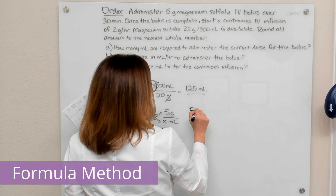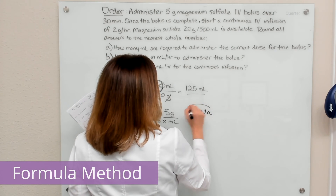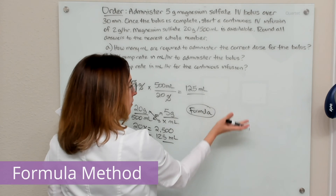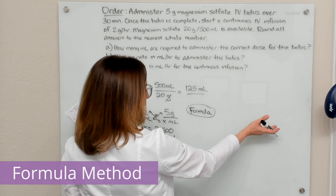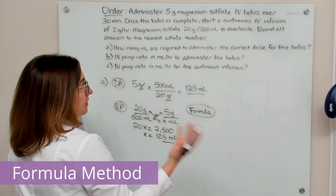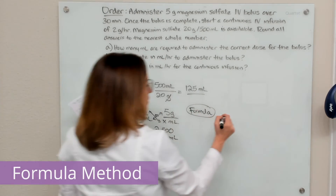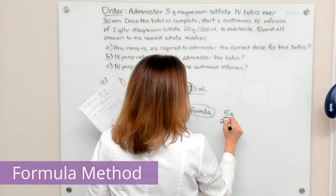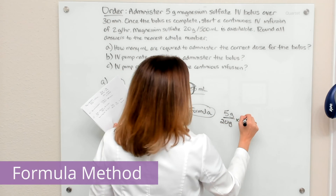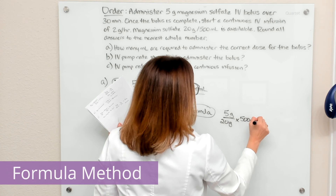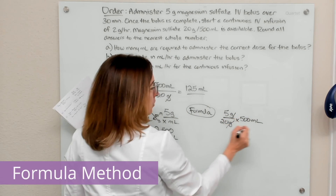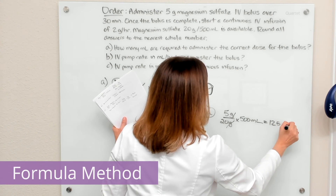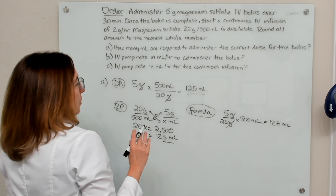We can also use the formula method to solve this. With the formula method, we have desired over have times the vehicle. Our desired or ordered dose is five grams, and what we have is 20 grams in 500 mL of solution. Our grams will cross off, and if we multiply this out, we again get 125 mL. So that's part A.